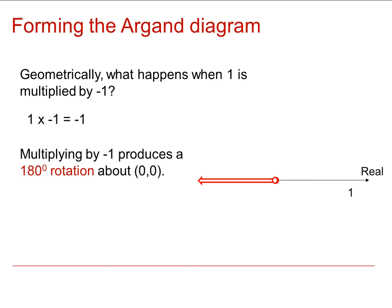So if we can multiply by negative 1, we might think, what is the implication of multiplying by the square root of negative 1, i.e. i? And if it was a rotation of 180 degrees for negative 1, then the square root of that we could think about as probably being a rotation by 90 degrees.